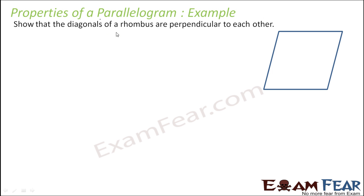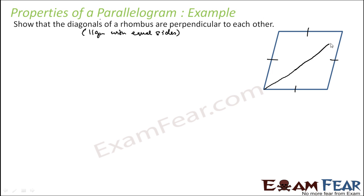So let me write the definition: rhombus is nothing but a parallelogram with equal sides — that means all four sides are equal. We have to prove that the diagonals of this rhombus are perpendicular to each other. So let's draw the diagonals first — this is one diagonal, and this is another diagonal. We have to prove that these diagonals are perpendicular.